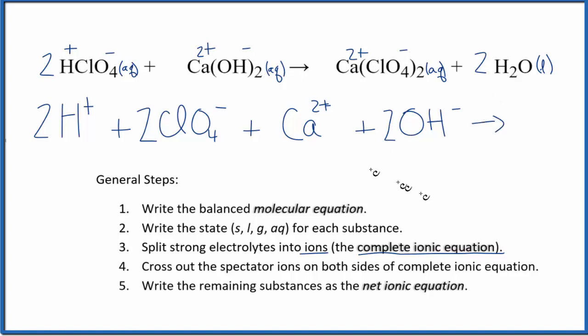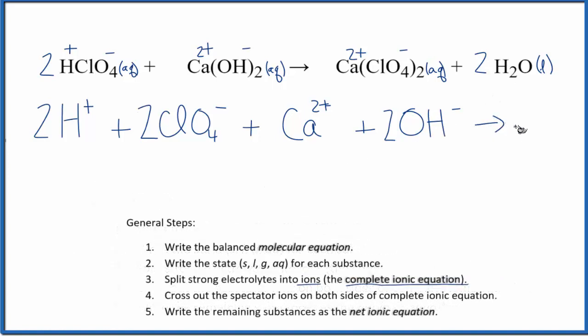Let's write the products. Move this down a bit. For the products, we have Ca2+, plus we have ClO4, and that has the minus there.